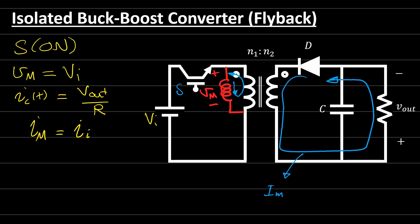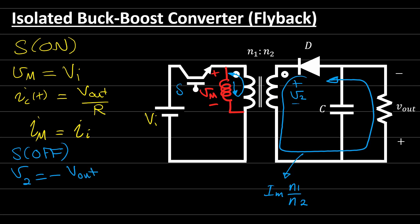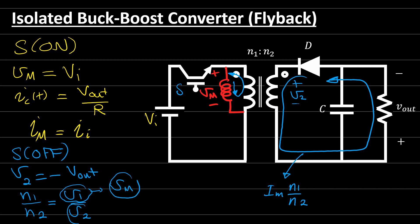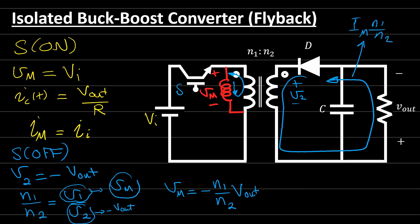The secondary current equals the magnetizing inductance current Im times the turns ratio N1 over N2. The secondary voltage V2 equals minus V_out, because the current flows in the opposite direction across the output resistor. Using the transformer relation N1/N2 = V1/V2, where V1 is Vm and V2 is minus V_out, we get: Vm equals minus (N1/N2) times V_out.